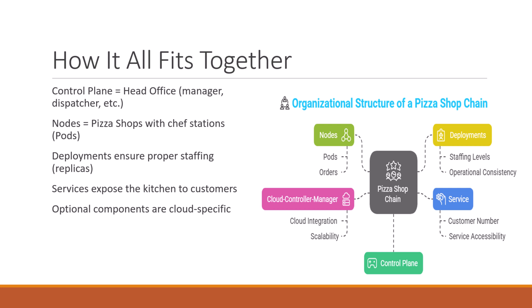How it all fits together: here is how everything works in sync, like a pizza empire running smoothly. The control plane (head office) handles the decisions. Each node (pizza shop) runs pods (chef stations). Deployments ensure enough chefs are on duty. Services give the customer one number to call. Optional components like the cloud controller manager only matter if you are on the cloud. All these pieces work together to deliver scalable apps.